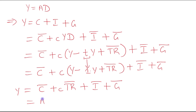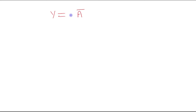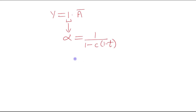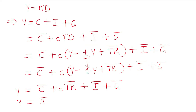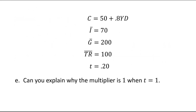With tax rate t equals 1, disposable income becomes Y minus Y equals 0, so the MPC term drops out entirely. Y equals A-bar, or equivalently 1 times A-bar, confirming the multiplier is 1 when the tax rate is 1. That completes the solution to this question.